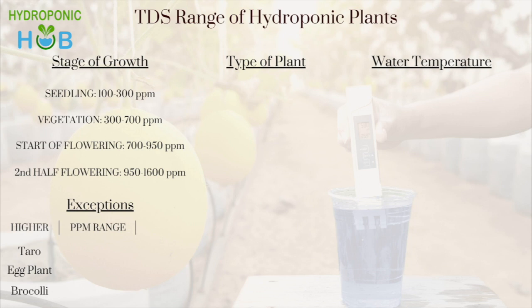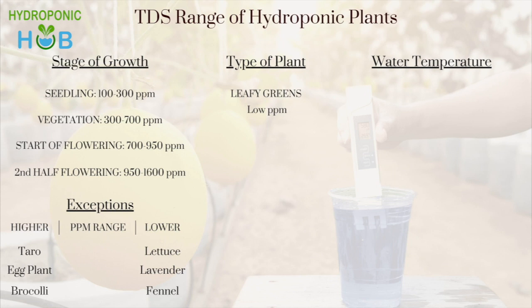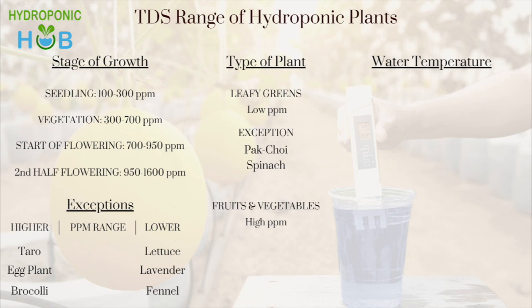For plants such as lettuce, lavender, and fennel, ppm levels are lower. Leafy greens generally require low ppm levels, with exceptions like bok choy and spinach which require higher ppm levels. Flowering fruits and vegetables require much higher ppm levels than leafy greens — for plants such as eggplant and broccoli, it could go as high as 2000 ppm.